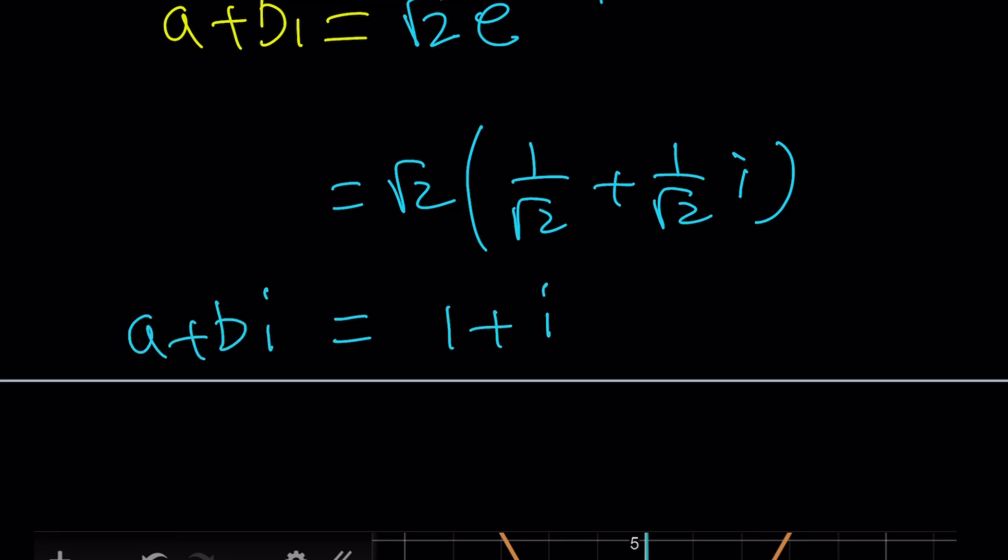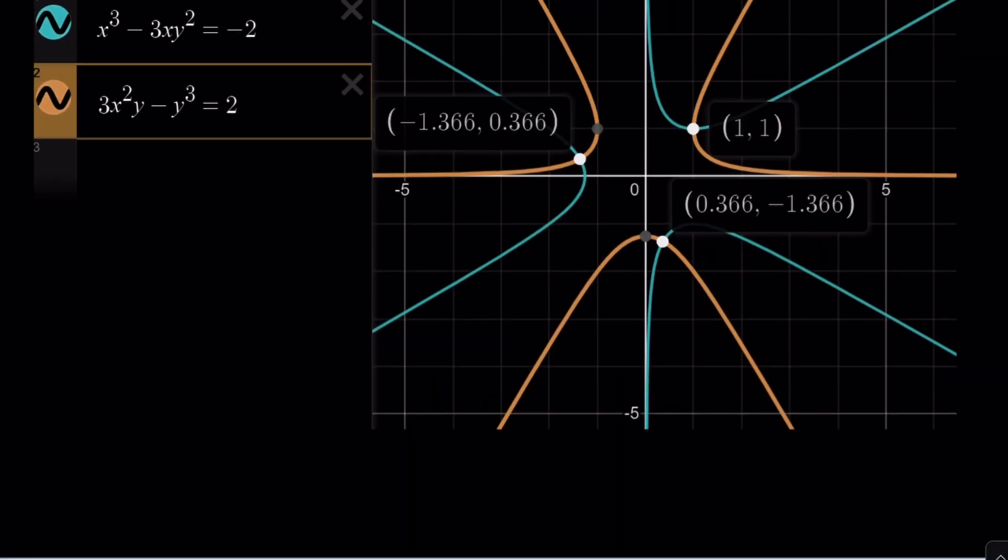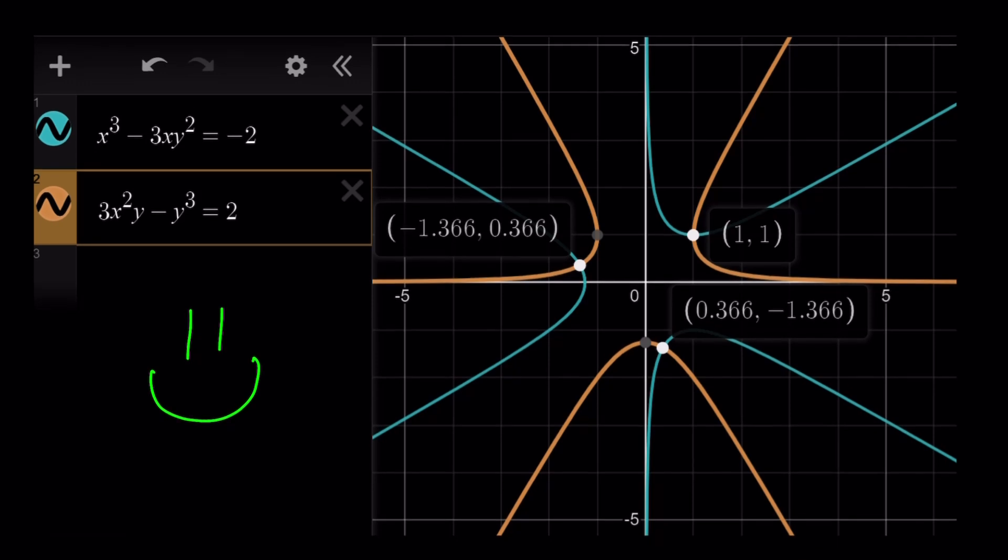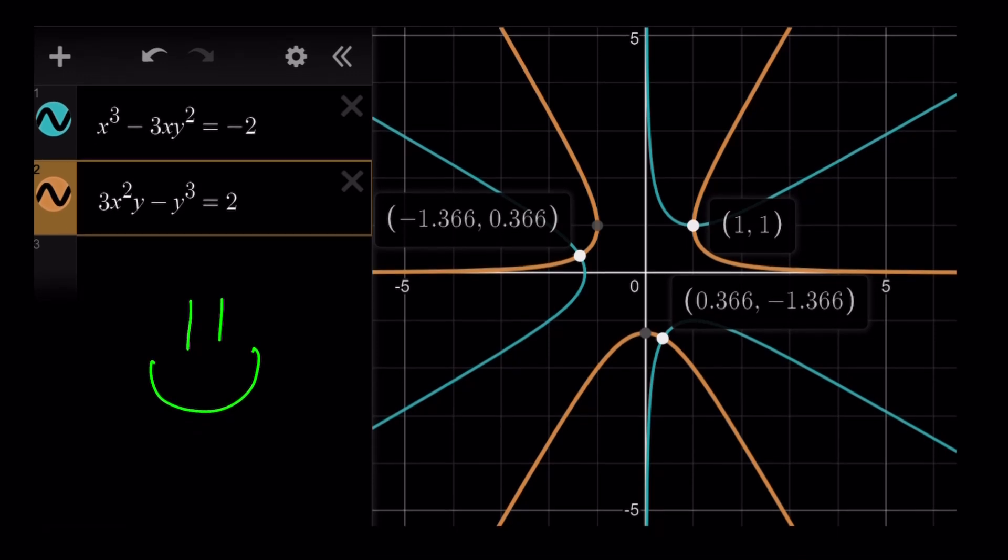Let's look at the graph. These two curves intersect at (1, 1) and two other points, because we were supposed to get two more solutions. This brings us to the end of the video. Thank you for watching. I hope you enjoyed it. Please comment, like, and subscribe. I'll see you next time. Until then, be safe, take care, and bye-bye.